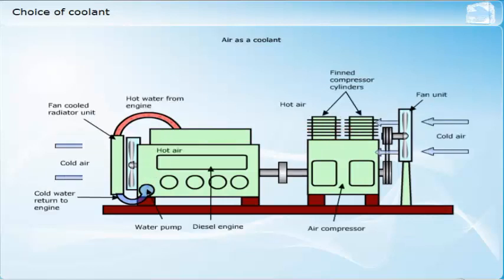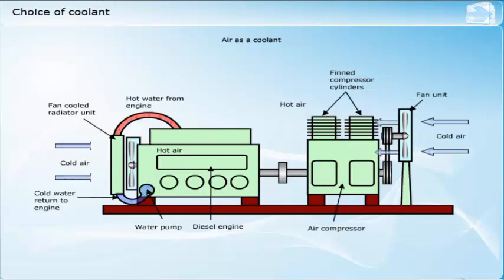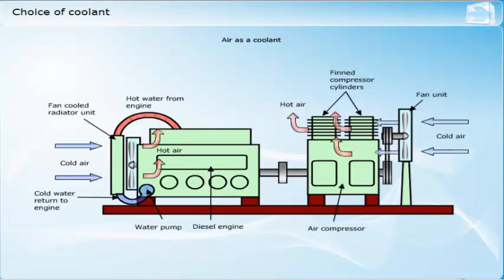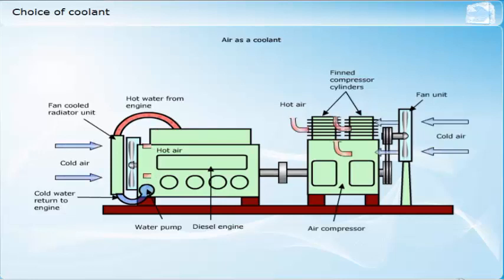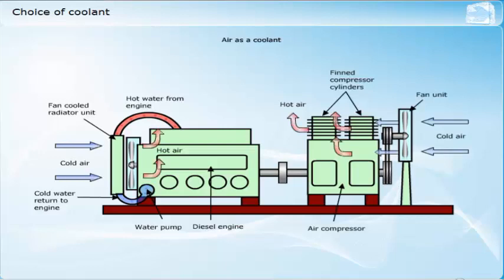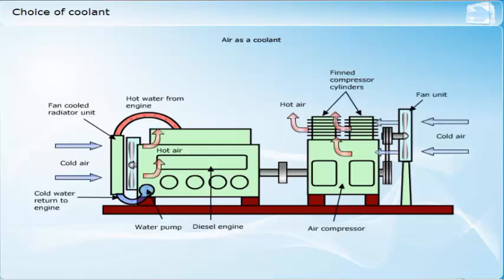Although air is plentiful, it has a relatively low specific heat capacity of approximately 1.0 kilojoules per kilogram Kelvin. The low density of air would require that large volumes would need to be supplied to take away the heat from the various diesel engine systems.